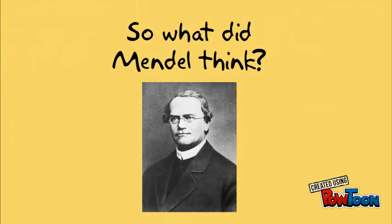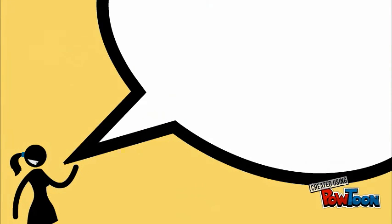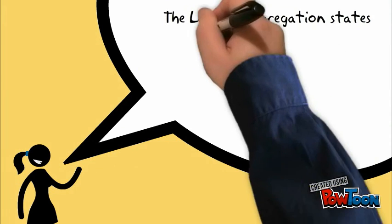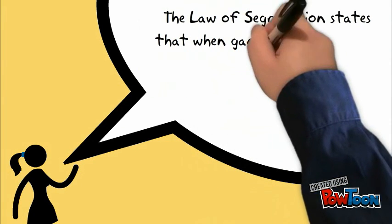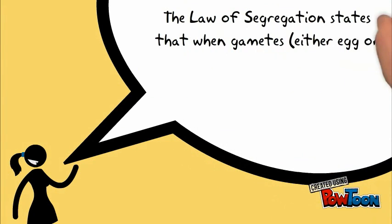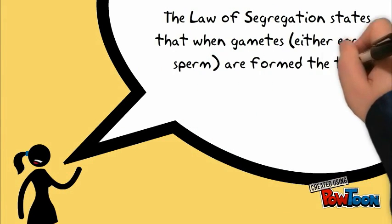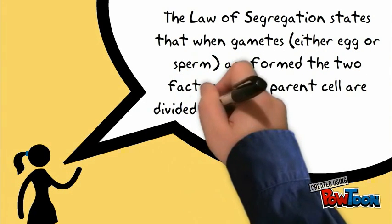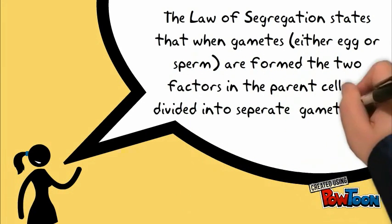So, based on these results, what did Mendel think? From these results, he developed his Law of Segregation. The Law of Segregation states that when gametes, either egg or sperm, are formed, the two factors in the parent cell are divided into separate gamete cells.